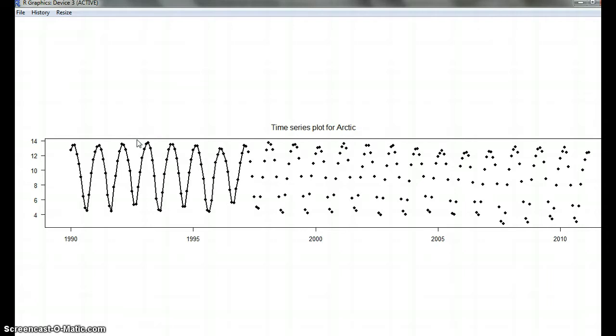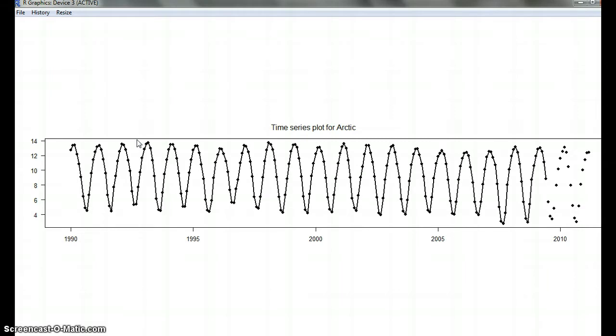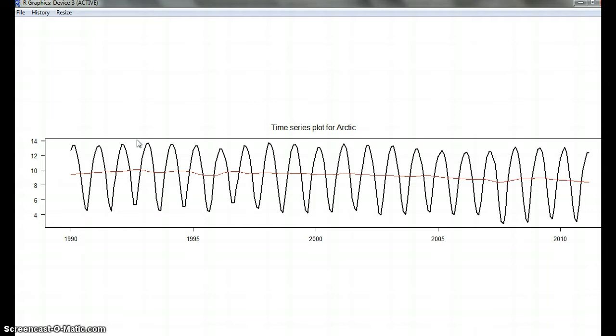Okay. So, we can see, nicely sped up. We've got our time series plot for the Arctic. Now, this red line in there, that's a smoothing thing.